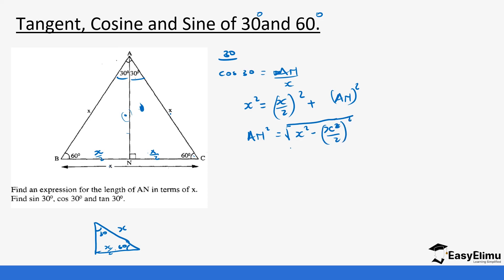This AN is equal to, when we do that value, x squared is the same as x squared minus x squared over 4. We can do that calculation inside the bracket, which the LCM is 4. This becomes 4x squared minus x squared, which gives us 3x squared over 4. So AN is the square root of 3x squared over 4. This is the same as the square root of 3 over 4 times the square root of x squared, which can give us x square root of 3 over 2.